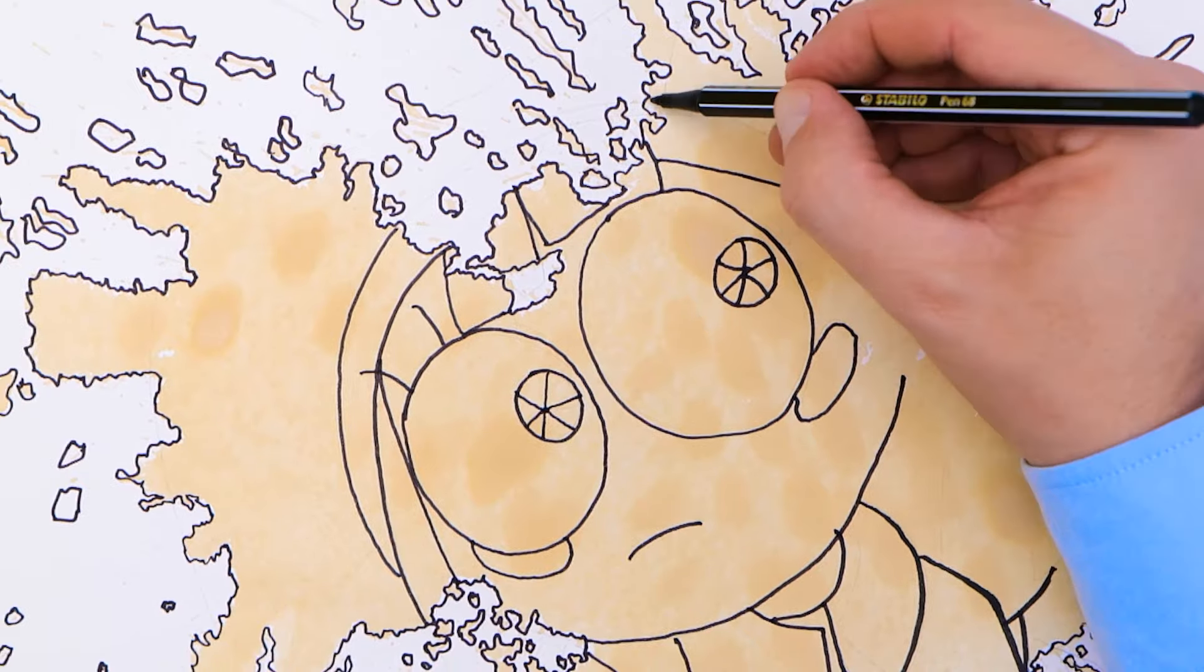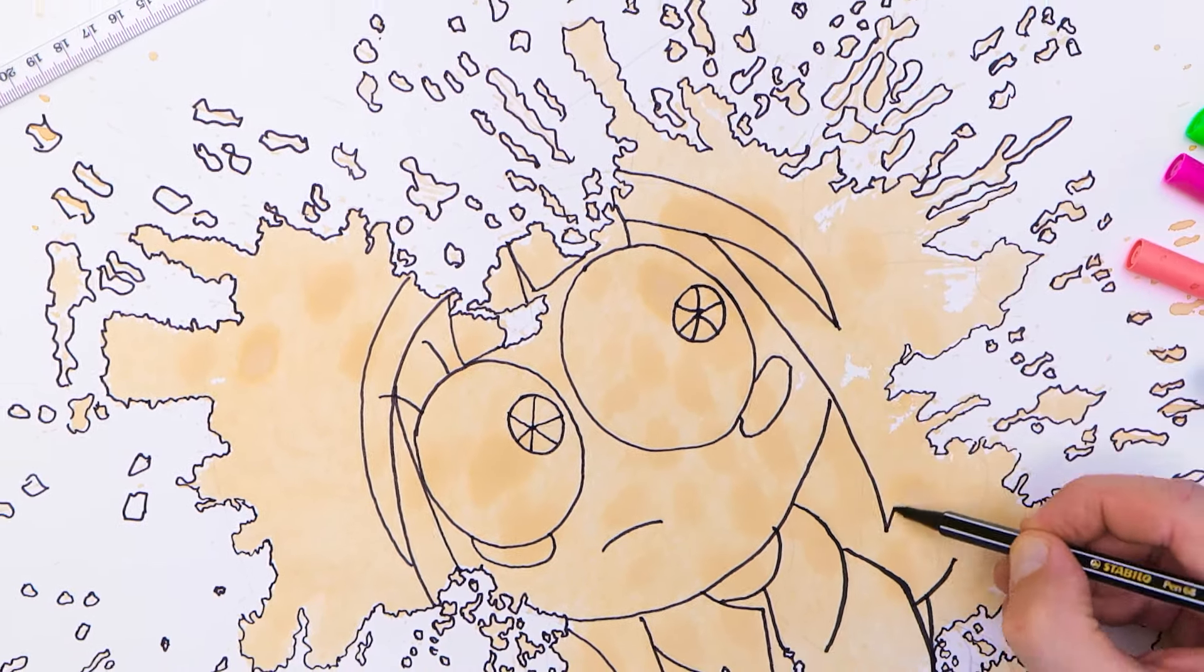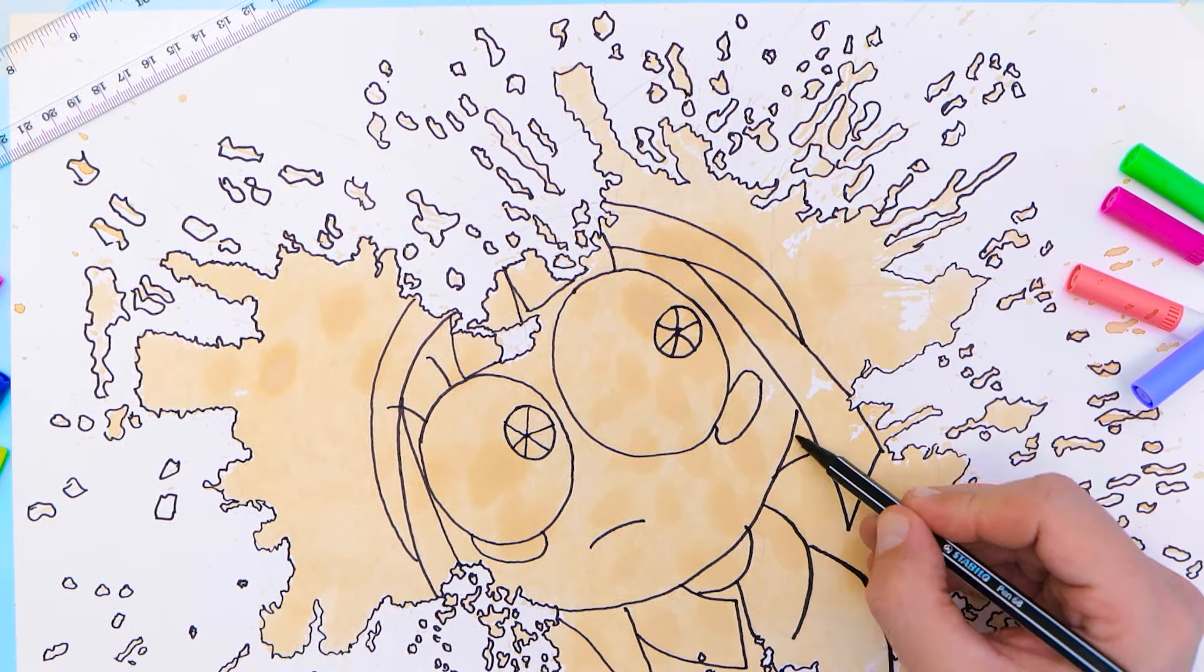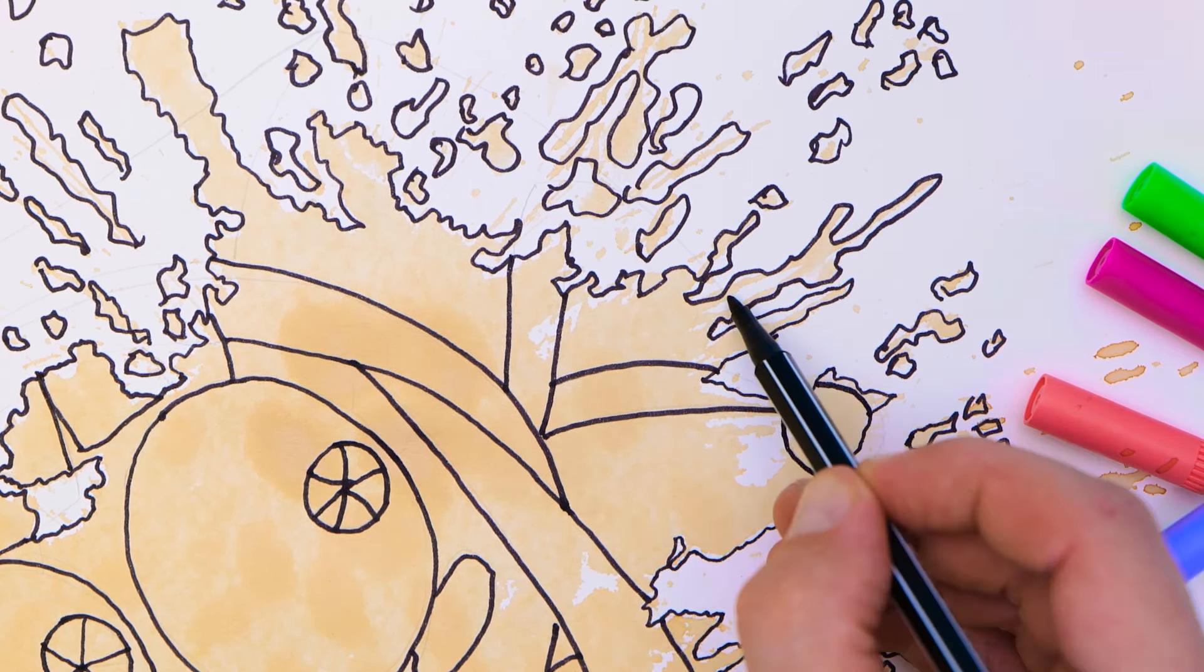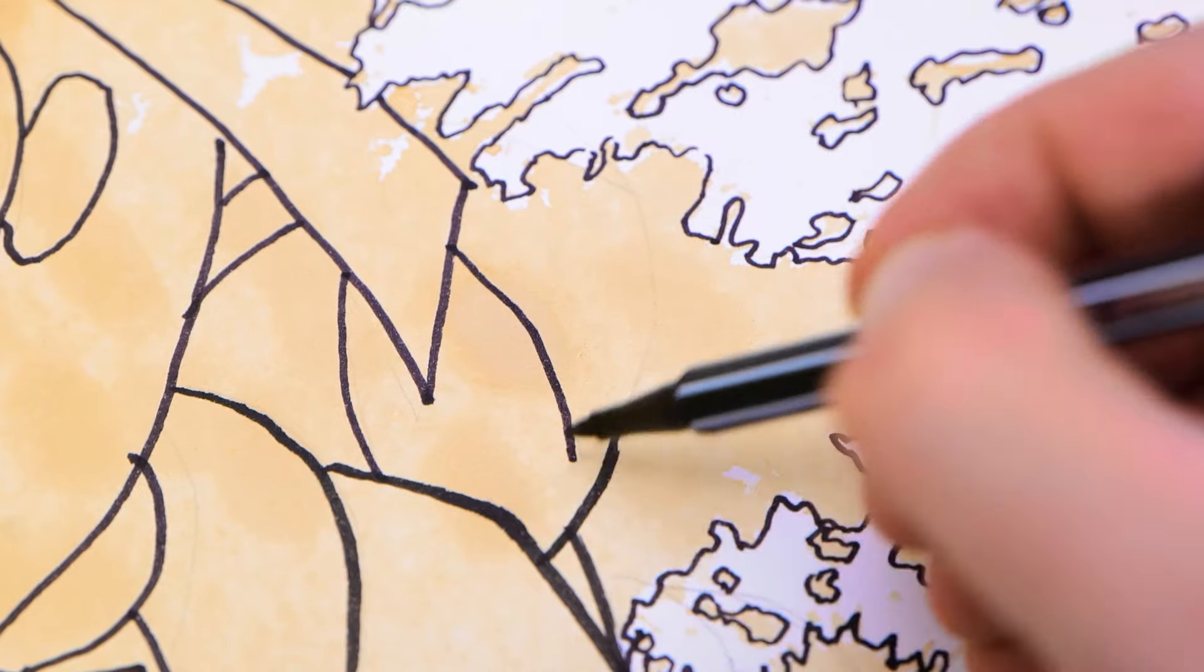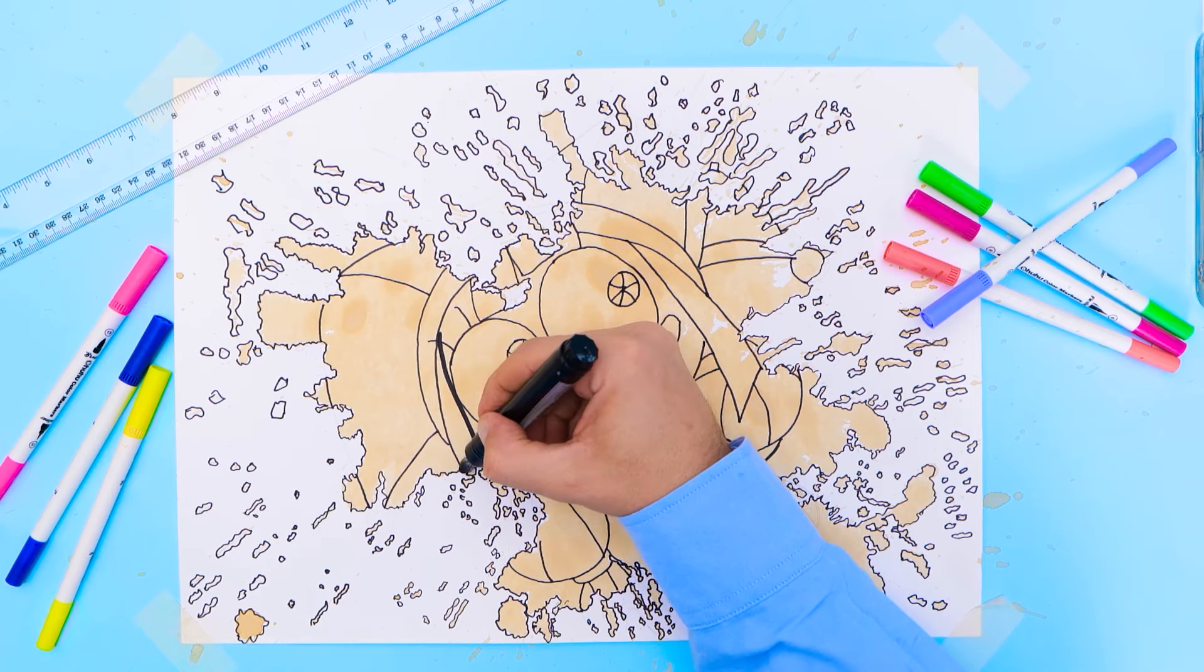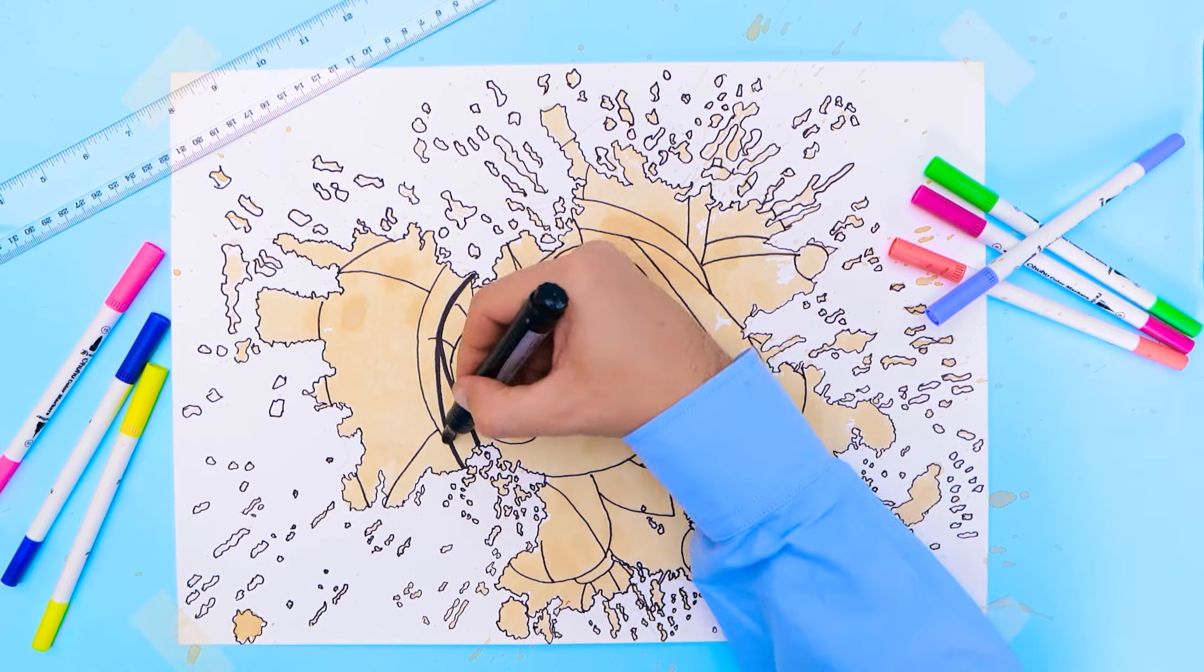When I draw something like this, I start by using a pencil. Then, I go over it with a black marker. Pencil helps make the drawing just as I imagine it. It's easy to erase it if something goes wrong. And a thick black marker will help those lines really stand out.